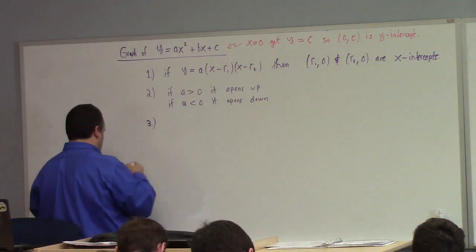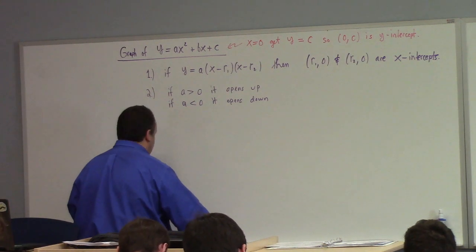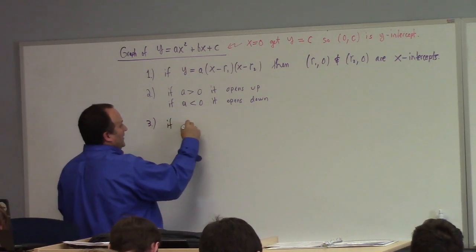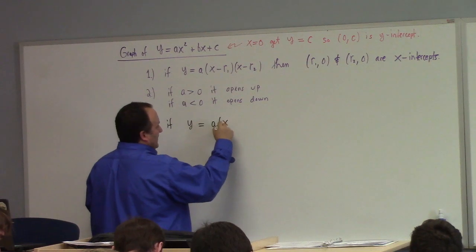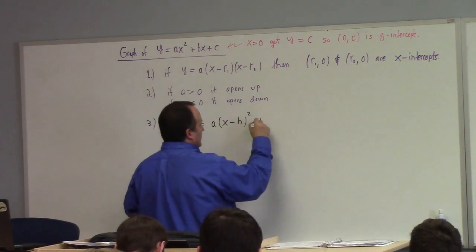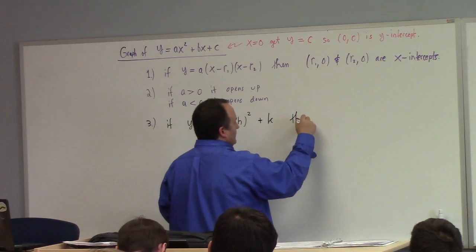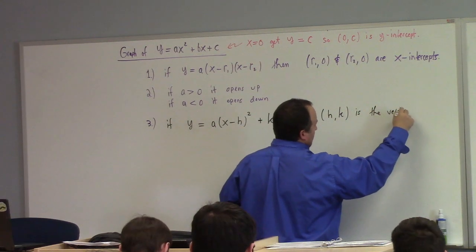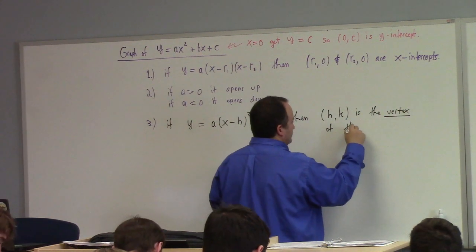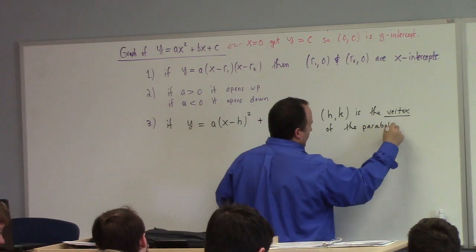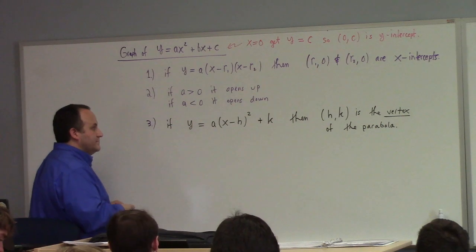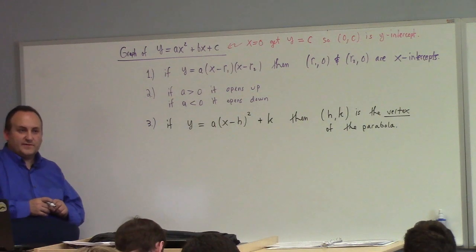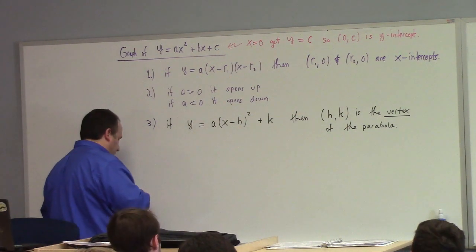Number three. And this is the one that's a little bit more subtle, but it's actually pretty simple. If y is equal to a times x minus h squared plus k, then h, k is the vertex of the parabola. Now, we can find formulas for the vertex. Let's find some formulas for the vertex.